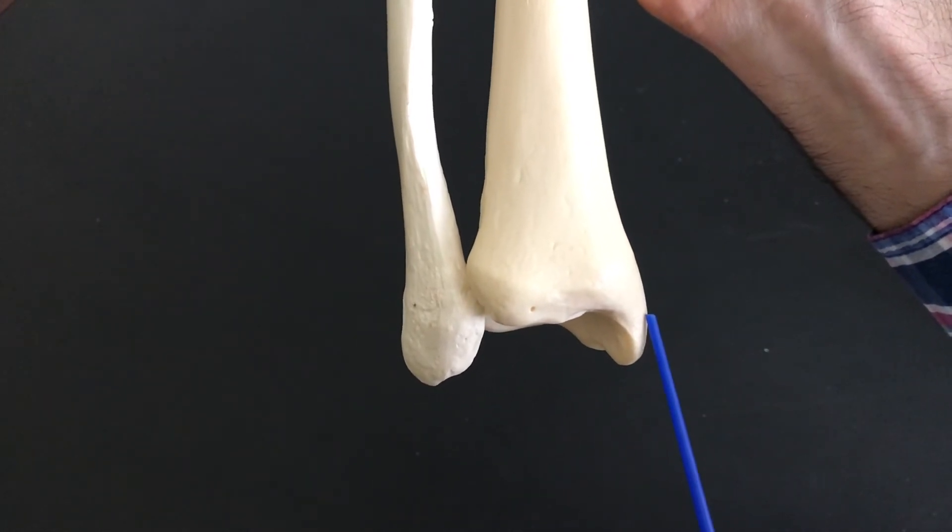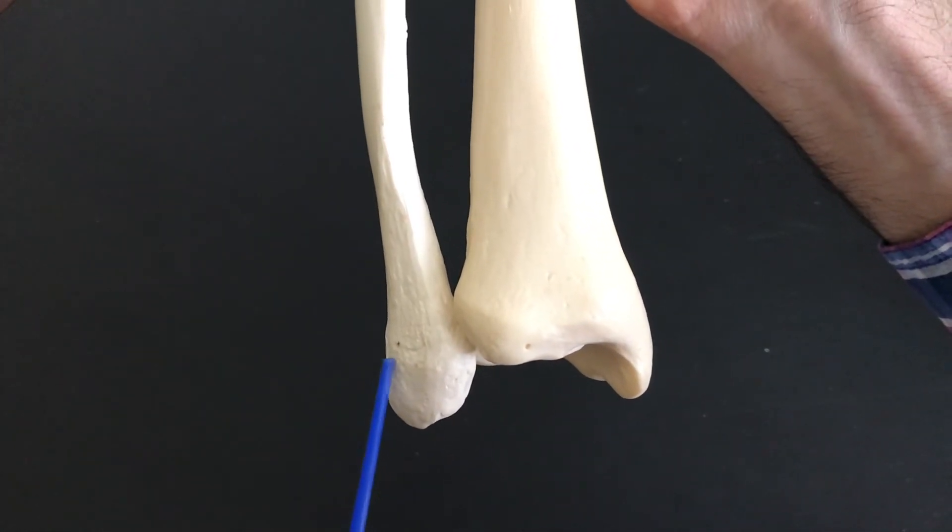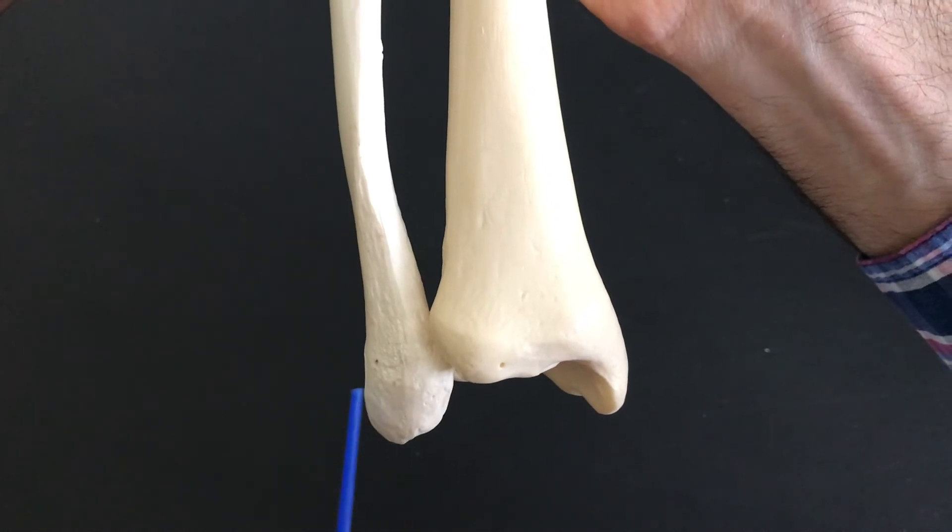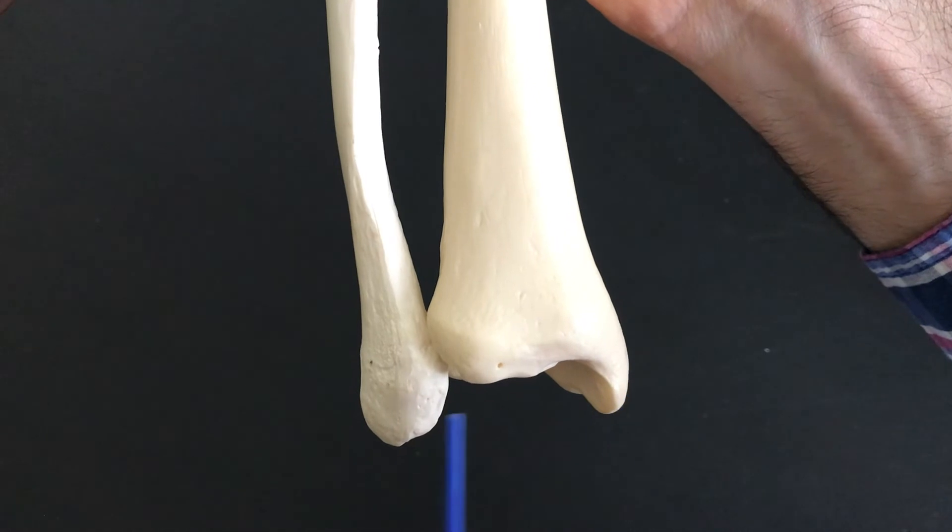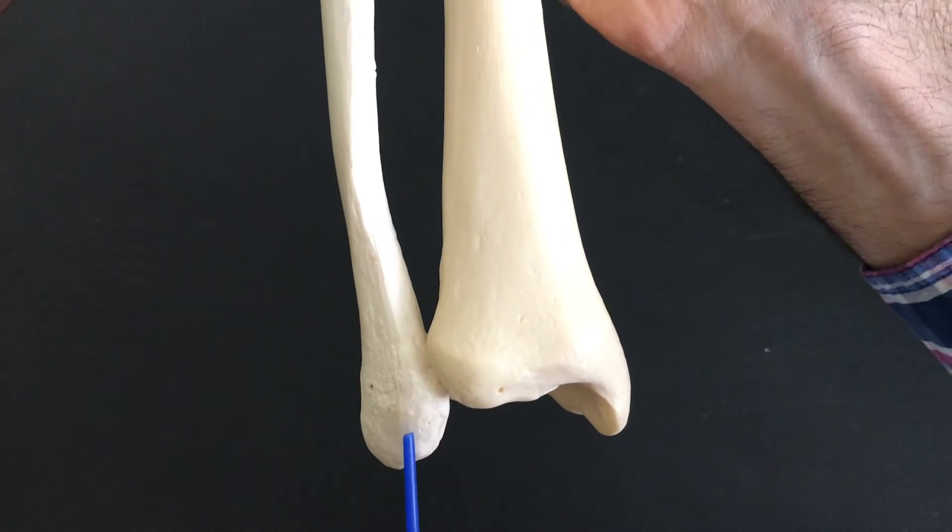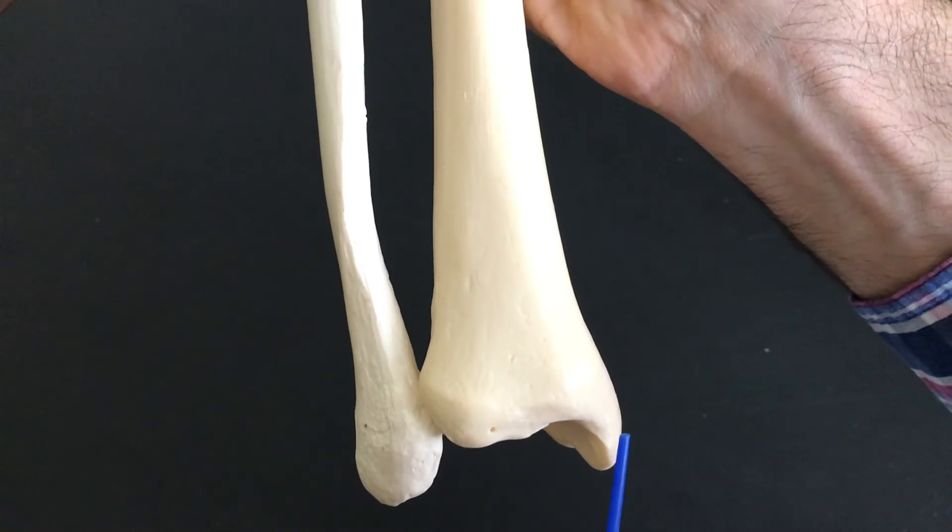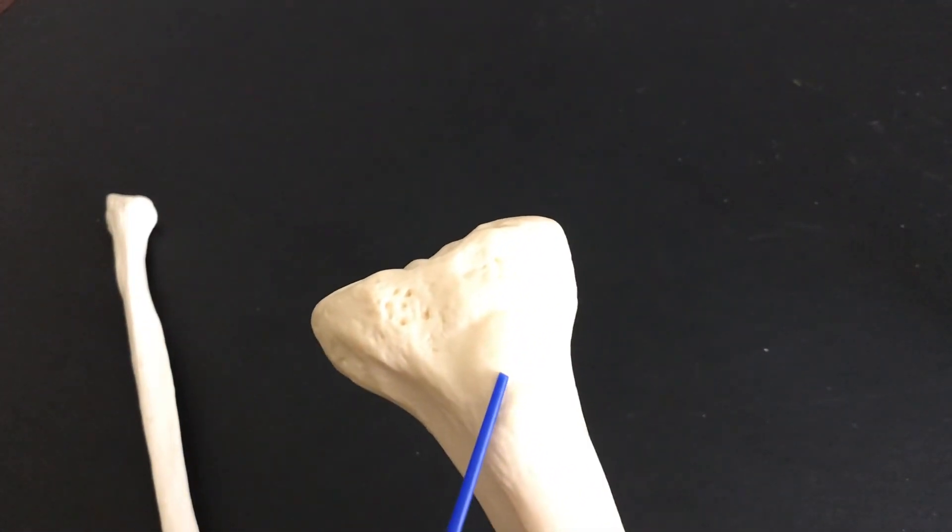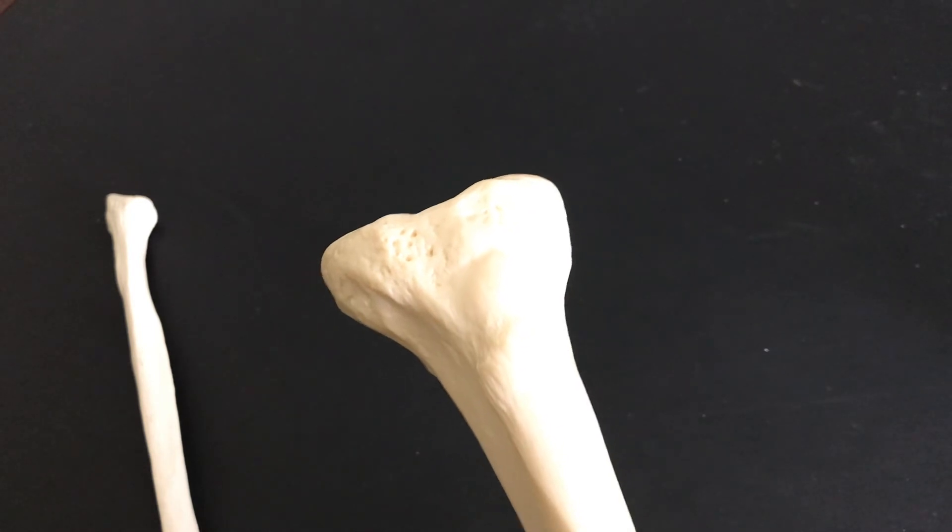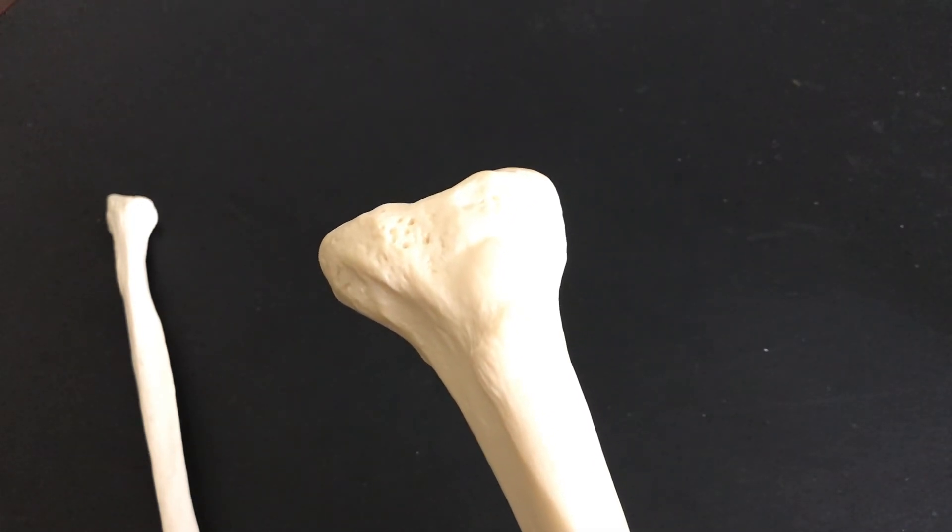And the lateral ankle, the bump on the outside of your ankle, that's your lateral malleolus. Medial malleolus, lateral malleolus. This is the medial malleolus, and I know that we're looking at the anterior side here, this must be a right tibia.